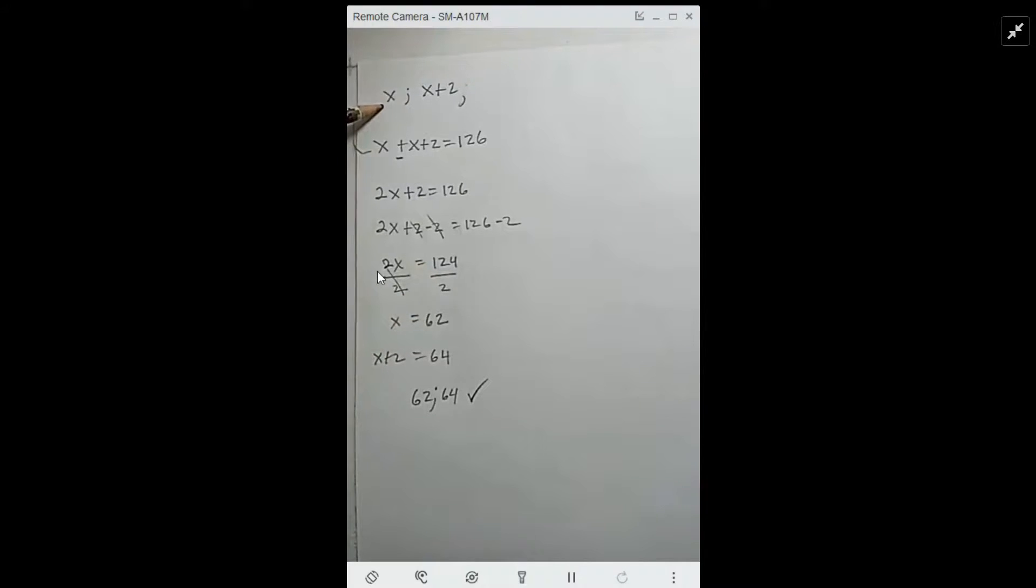So that's our first integer. The second one, we know it's going to be the next even integer, which is plus 2. Verify that 62 plus 64 equals 126.